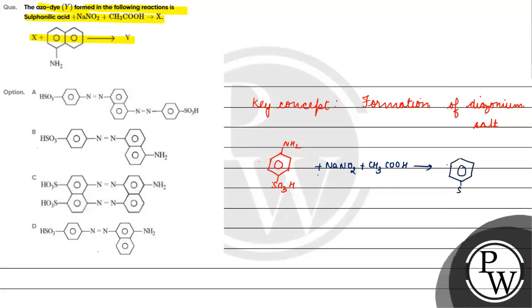This basically will result in the formation of N2 plus O minus C double bond O CH3.